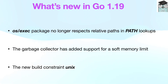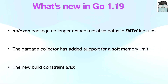The new build constraint 'unix' is satisfied when the target operating system (GOOS) is any Unix-like system. Today, Unix-like means all of Go's target operating systems except js, plan9, windows, and iOS.